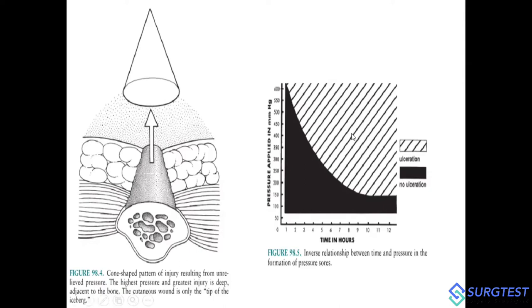This diagram shows the inverse relationship between time and pressure for ulcer generation. With very high pressure — like 600 mmHg — the duration needed is less than one hour to create a pressure injury. Conversely, with low pressure, a higher duration of time is required.